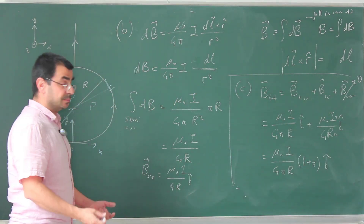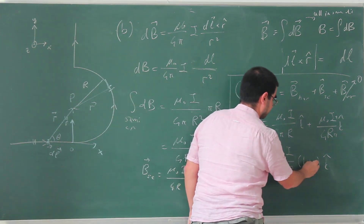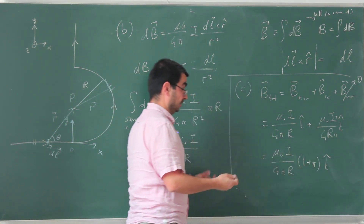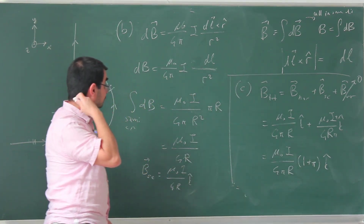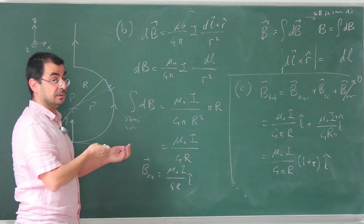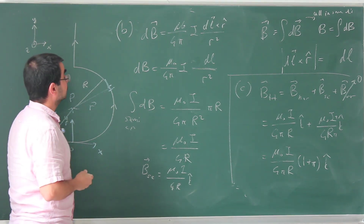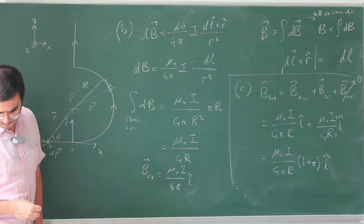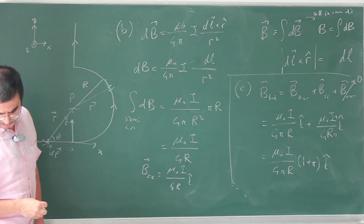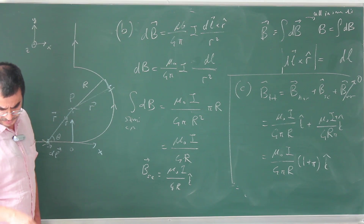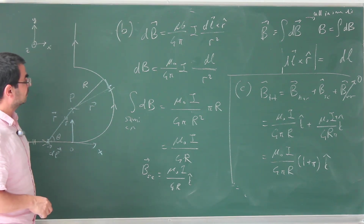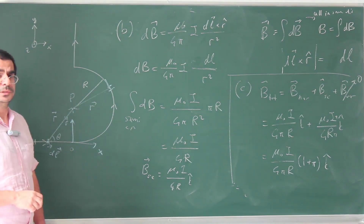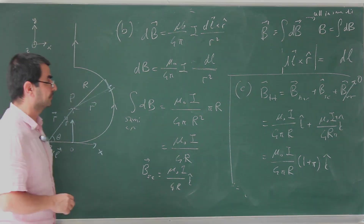The total magnetic field is mu_0 I over 4pi R times (1 plus pi) k-hat. This looks a little strange, so if you get this on an exam you might feel nervous, but it is what it is — it's compatible with the answer given in the official answer sheet.